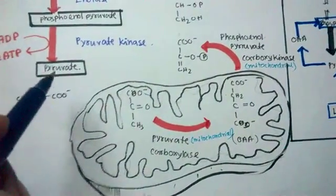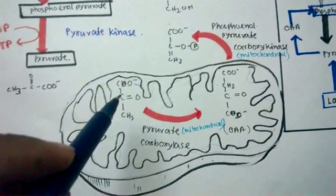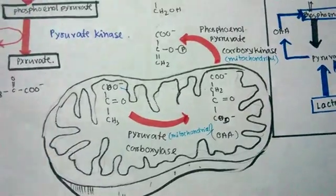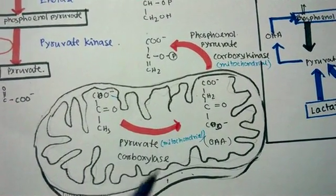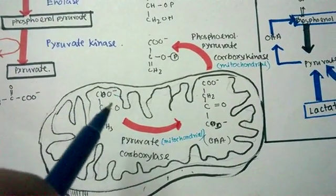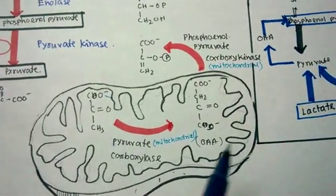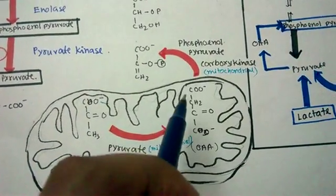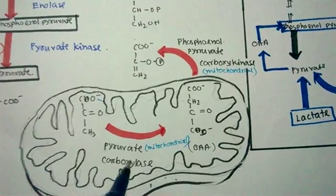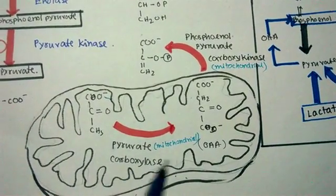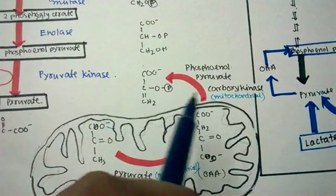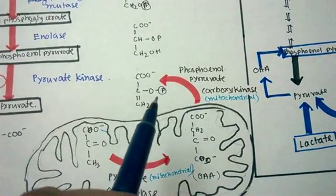After glycolysis, pyruvate enters the mitochondria. When glucose levels are low and the body needs glucose, gluconeogenesis takes place. The crucial enzyme here is pyruvate carboxylase, which adds a carboxyl group to pyruvate, converting it into oxaloacetate. Pyruvate is a three-carbon compound, while oxaloacetate is four-carbon — so it is a step-up reaction. Pyruvate carboxylase is a mitochondrial enzyme that requires biotin for carboxylation. The oxaloacetate then exits into the cytoplasm and is converted by PEPCK (phosphoenolpyruvate carboxykinase) to phosphoenolpyruvate.